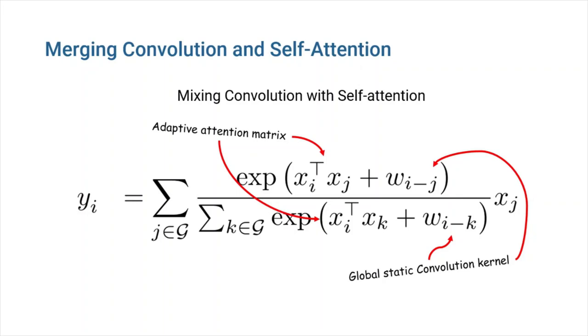So, in other words, attention weights are decided by a combination of a CNN kernel and an adaptive attention matrix. This formula interestingly corresponds to a special variant of attention called relative self-attention, in which relative position representations are used.